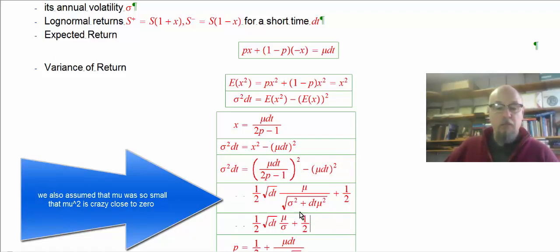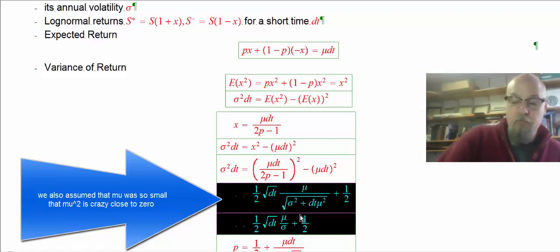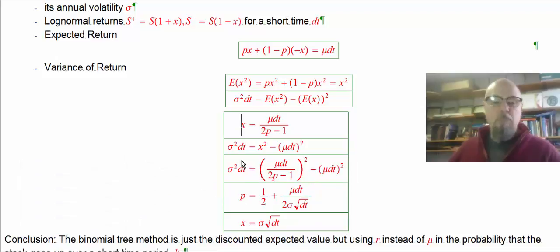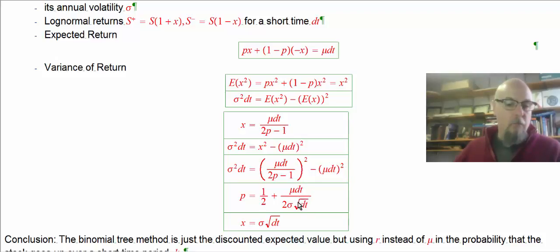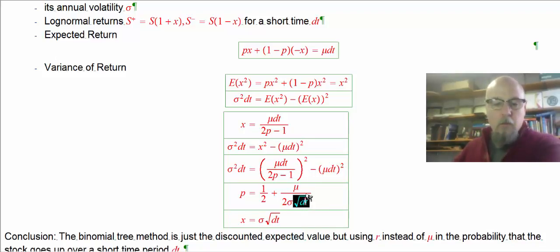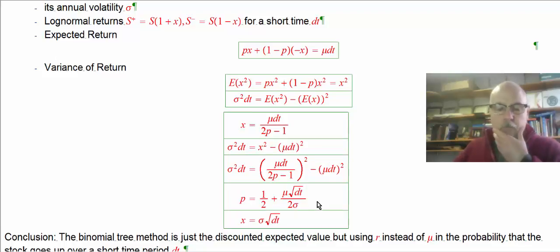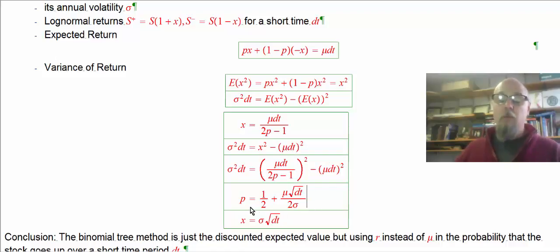When we solve for p, we get p = one-half plus a term involving mu·dt and sigma·root-dt. There's a full dt and a root-dt term we can simplify, and we arrive at the true probability that the stock goes up as a function of the time step, the drift rate, and the volatility.